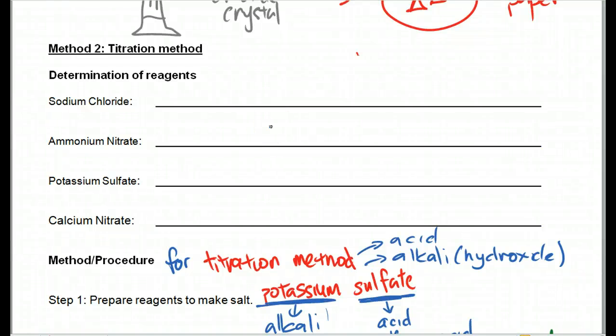For the titration method, how do we determine the reagents? As I've said previously, it involves an acid reacting with an alkali. The acid is normally formed from the anion. The alkali normally is formed from the cation. So in this case here, let's split it up.